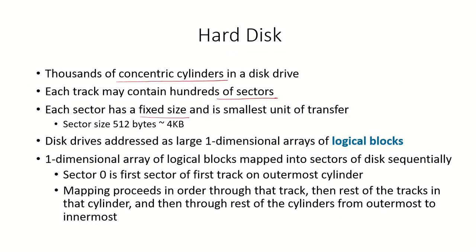Each sector has a fixed size and is the smallest unit of transfer. This sector size may vary from 512 bytes to, nowadays, 4 kilobytes. When we want to refer to an address on a disk drive, we refer to it as a logical block. The disk drive can be thought of as a one-dimensional array of logical blocks, and these blocks are mapped onto the sectors of the disk. Sector 0 is the first sector — this is the convention usually followed, though it can be mapped another way also.